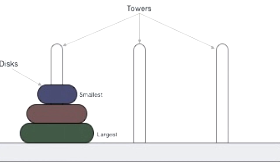Rule three: you cannot place a large disc over a small disc. As shown in our picture, we cannot have the green on top of the blue, because the blue is the smallest. The green is a large disc and cannot sit over a small disc — it has to always be on the bottom, and the brown disc has to be in the middle.